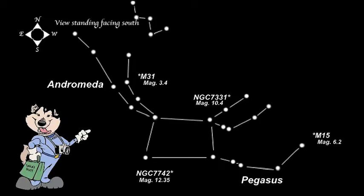Pegasus is also home to Stéphane's Quintet. You won't be finding this in your backyard scope, as it is pretty faint at magnitude 14, but it is worth noting. Stéphane's Quintet is a group of five galaxies.